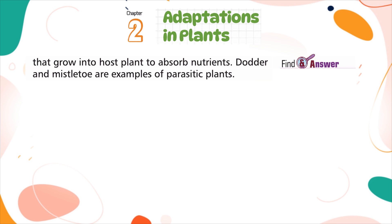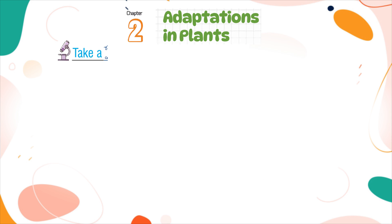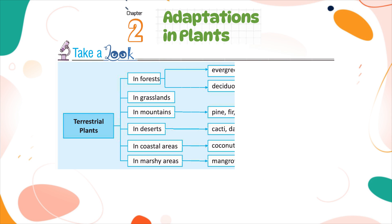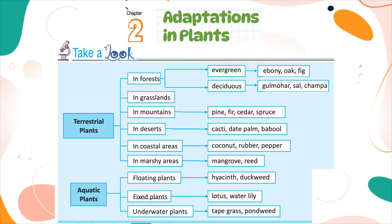Find an Answer: What are saprophytic plants? Summary of habitats and examples — In forests: evergreen trees include ebony, oak, fig; deciduous trees include gulmahar, sal, champa. In grasslands. On mountains: pine, fir, cedar, spruce. In deserts: cacti, date palm, babool. In coastal areas: coconut, rubber, pepper. In marshy areas: mangrove, reed. Aquatic plants — floating plants: water hyacinth, duckweed; fixed plants: lotus, water lily; underwater plants: tape grass, pondweed.